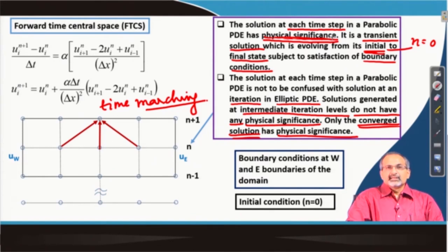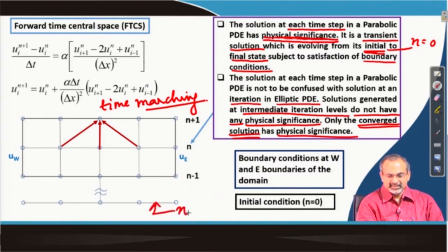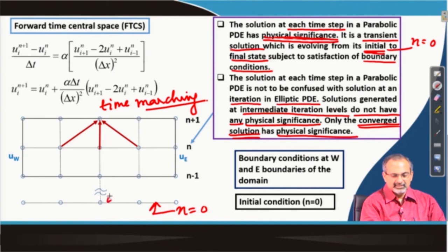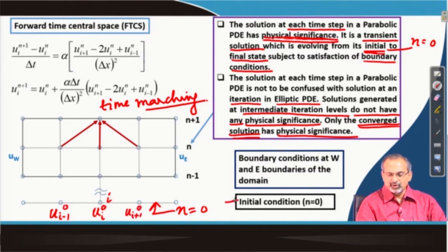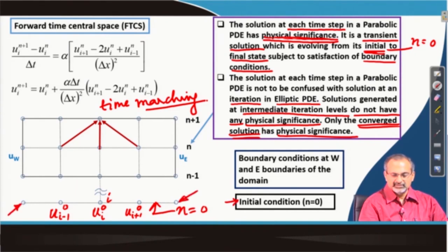As far as parabolic equation solution is concerned, we need an initial condition. At n equal to 0 you have a certain distribution of values of U — so you have U_i^0 prescribed through the initial condition, and likewise suitable values of U at other grid locations, all at time level 0. That forms the initial condition, and at the ends of the one-dimensional domain spanning along x, you impose two boundary conditions — one at x equal to 0 and another at x equal to L, where L is the length of the domain.